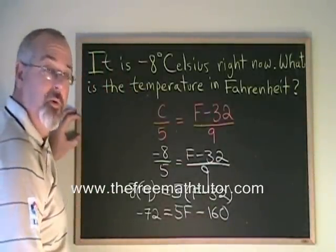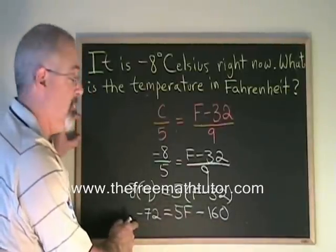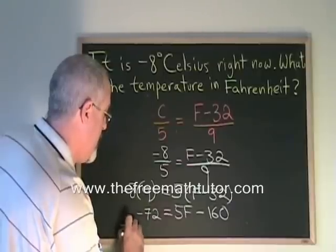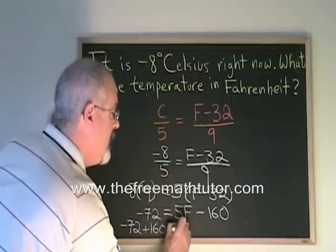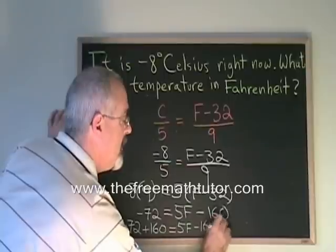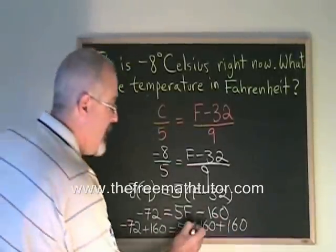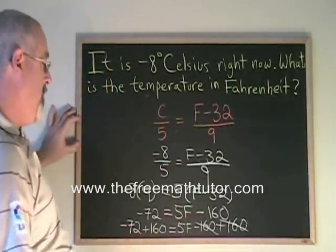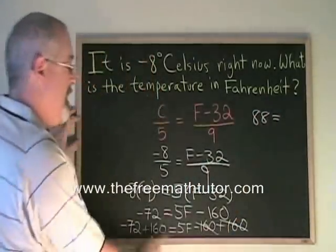Now using my usual algebra skills, I am going to move the minus 160 to the left of the equals. I am going to add 160 to both sides. I get minus 72 plus 160 equals 5F minus 160 plus 160. These cancel and I end up with minus 72 plus 160, which is equal to positive 88 equals 5F.